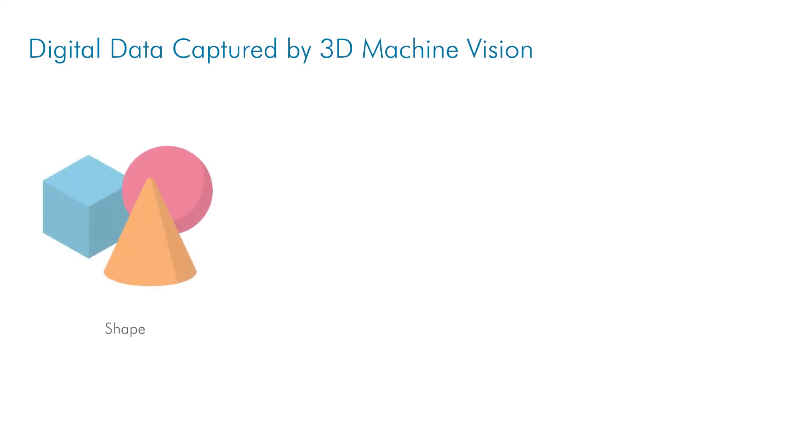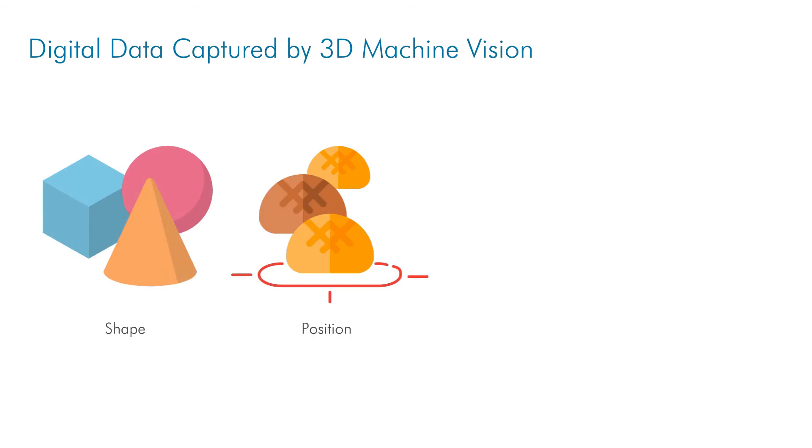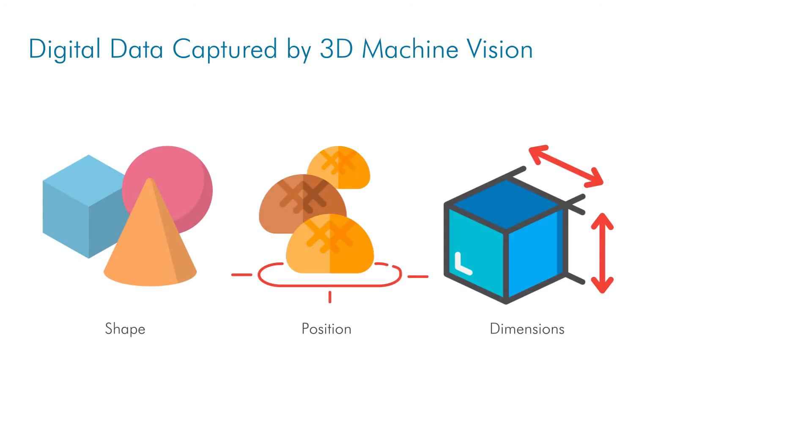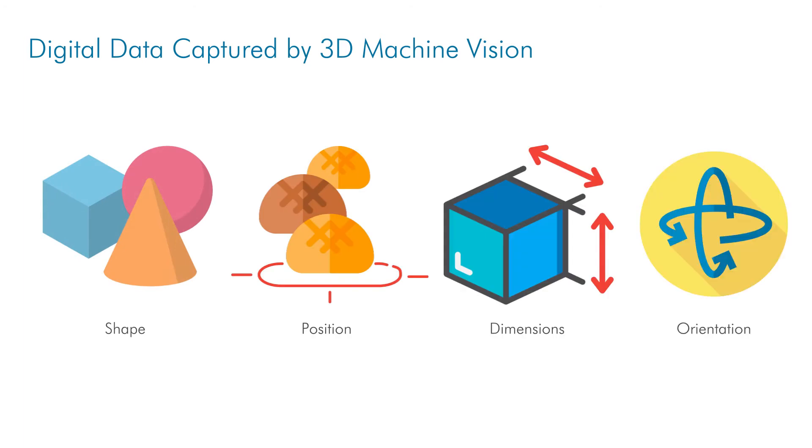We often say don't try and solve a three-dimensional problem with a 2D solution. And while 2D machine vision is suitable for many tasks, it can fall short when trying to address applications that need accurate, reliable information regarding the 3D nature of a scene, such as shape, position, dimensions, or orientation of an object.